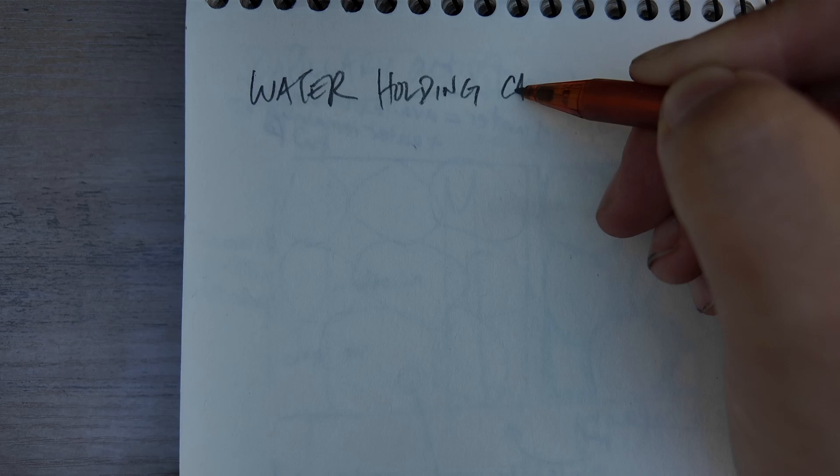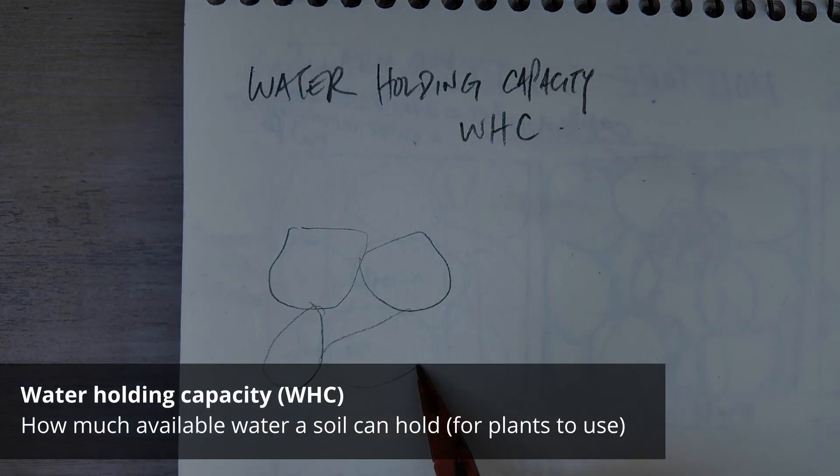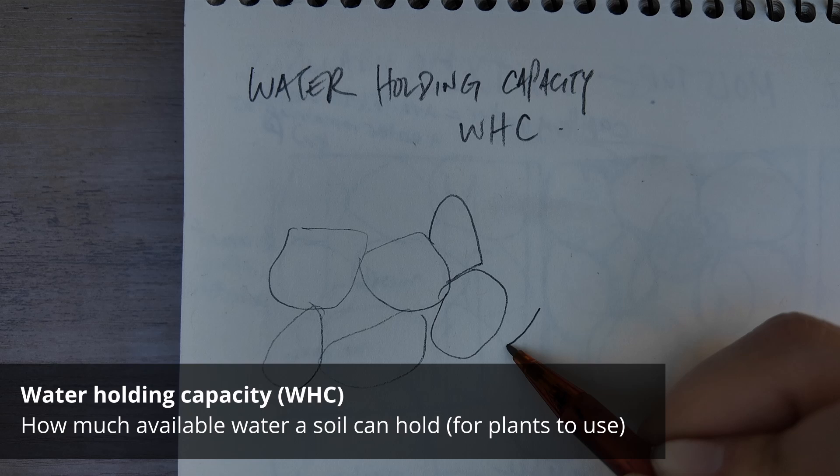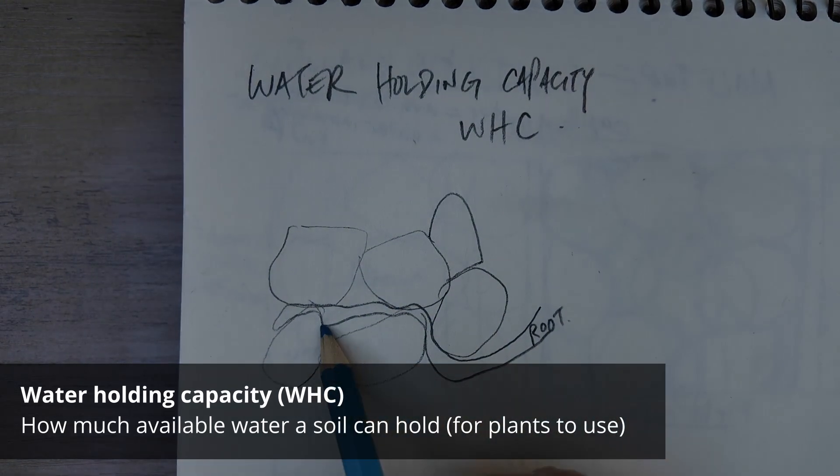The last term I have is water holding capacity. It's a soil's capacity to hold available water for plants to use. It's affected by soil texture and organic matter.